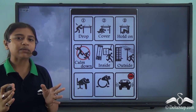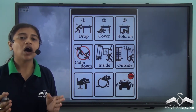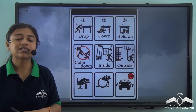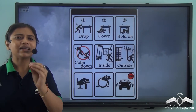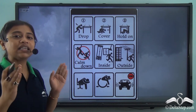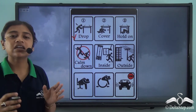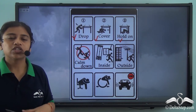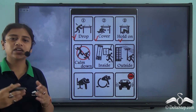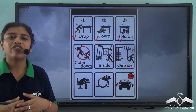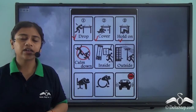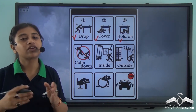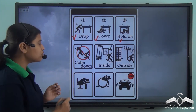During an earthquake, if we have no access to immediate help from the disaster management team, we need to keep certain steps in mind. First, immediately drop down and find cover, then hold on to the shelter you've found — it could be a table or a nearby seat. Cover your head with your arms and hold on. During an earthquake, keep yourself as calm as possible, because panicking creates more problems.